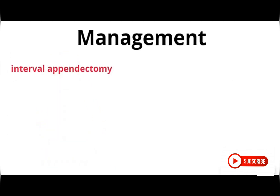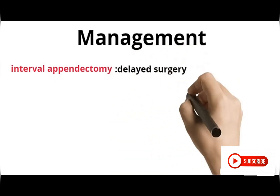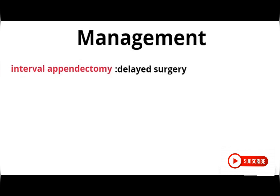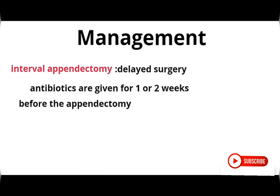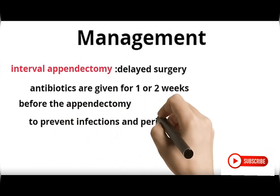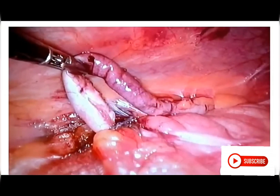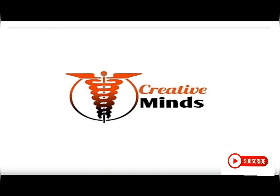Another form of management is interval appendectomy or delayed surgery, where patients with acute appendicitis are put on antibiotics for one to two weeks before the appendectomy or surgical removal of the appendix is performed. This is done to reduce infection or peritonitis and to help make surgery go more smoothly. This concludes today's lecture on acute appendicitis. Thank you for choosing Creative Minds.